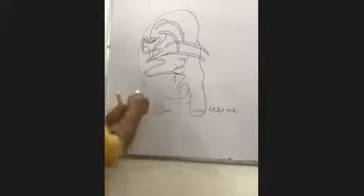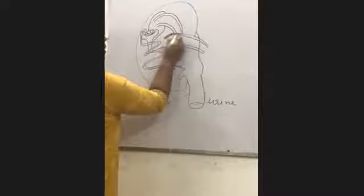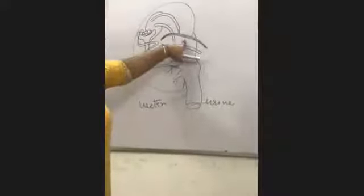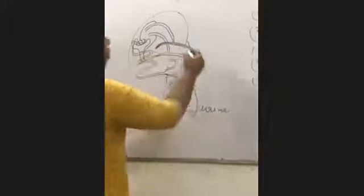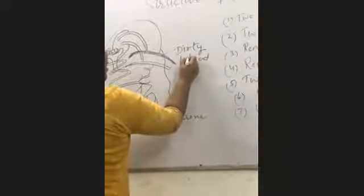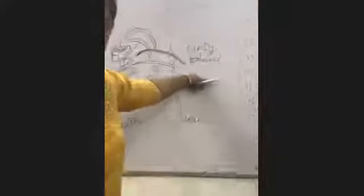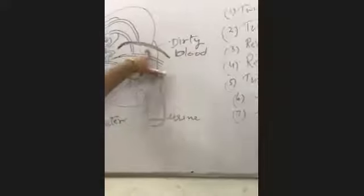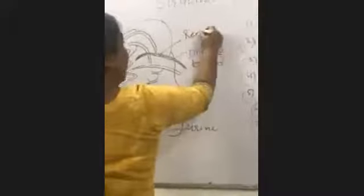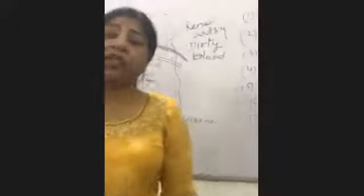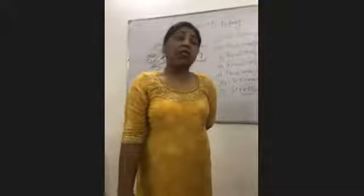Here I have two blood vessels shown. The first blood vessel is drawn dark — I want to show dirty blood here. This dark blood vessel contains dirty blood, which has poisonous and toxic substances in it. This blood vessel is labeled as renal artery. I have explained in the previous lecture that arteries carry clean blood.